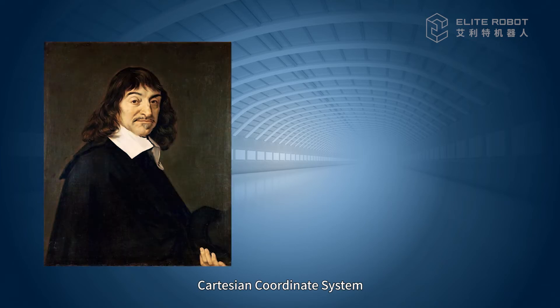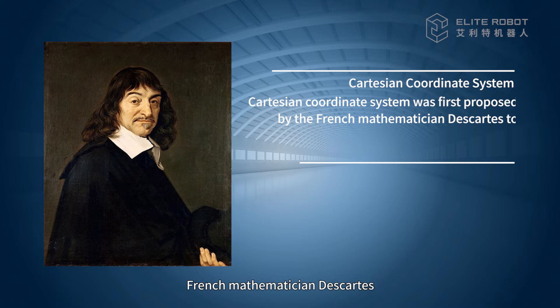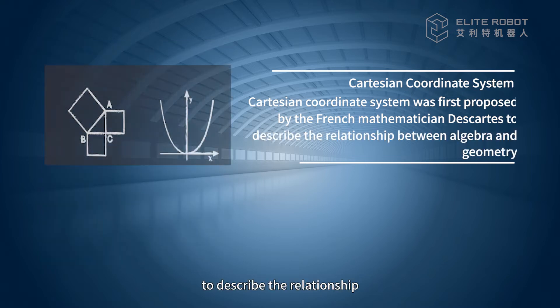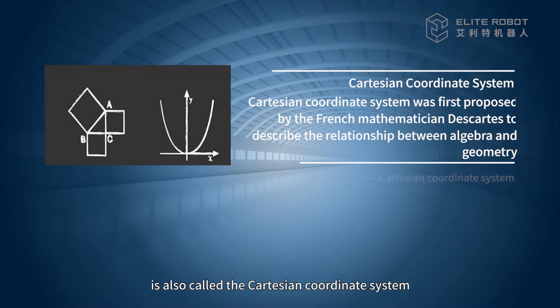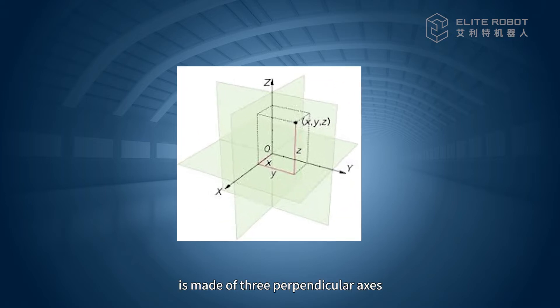The Cartesian coordinate system was first proposed by the French mathematician Descartes to describe the relationship between algebra and geometry. So the rectangular coordinate system is also called the Cartesian coordinate system. The Cartesian coordinate system is made up of three perpendicular axes all passing through a common origin point.